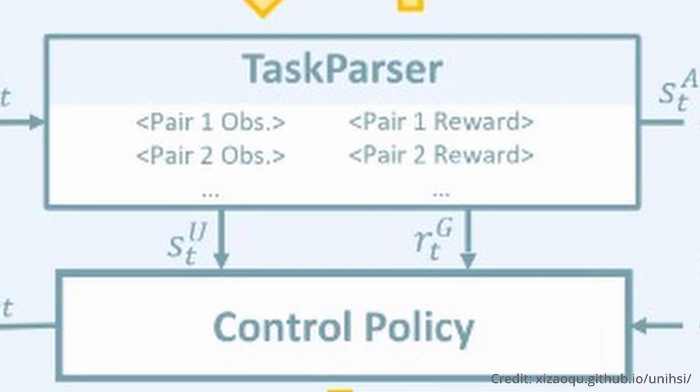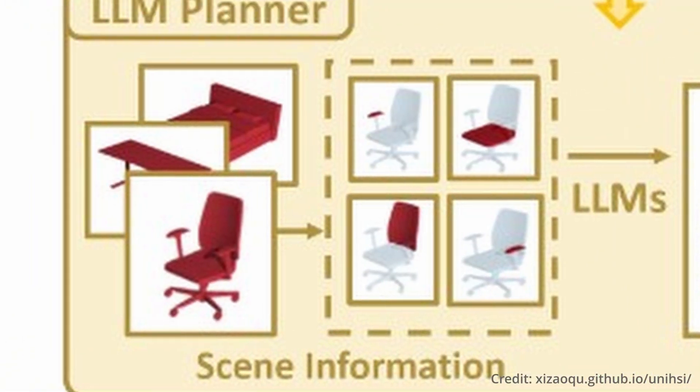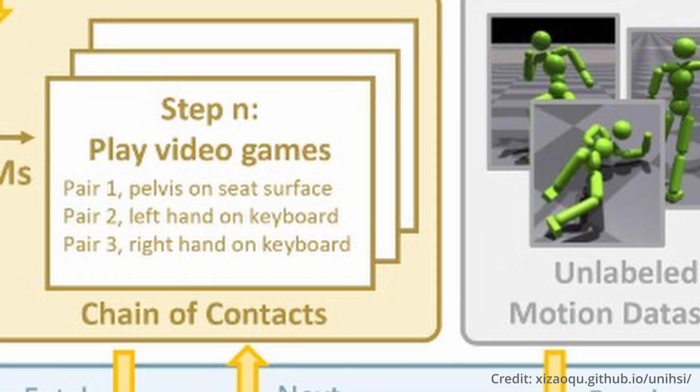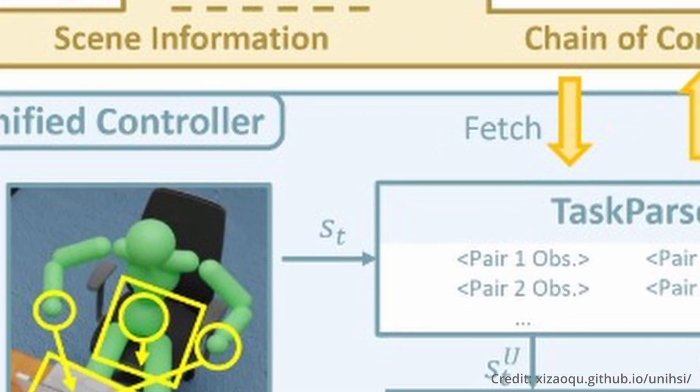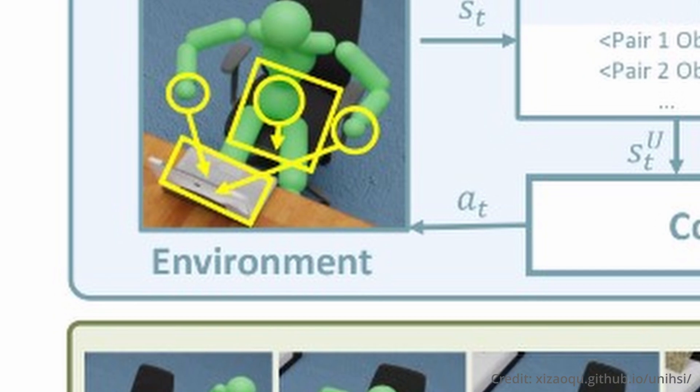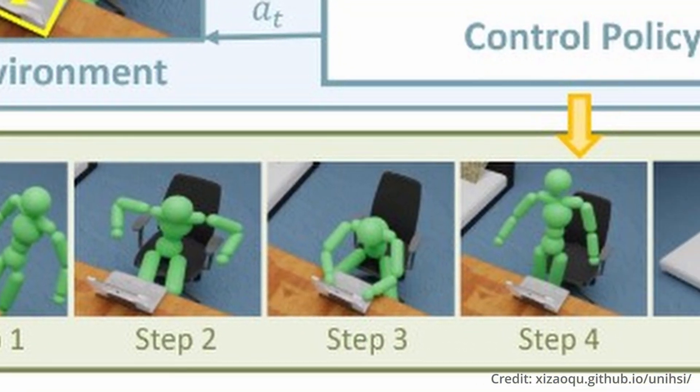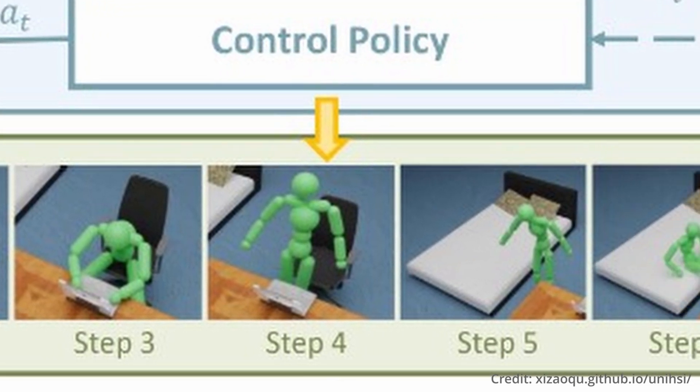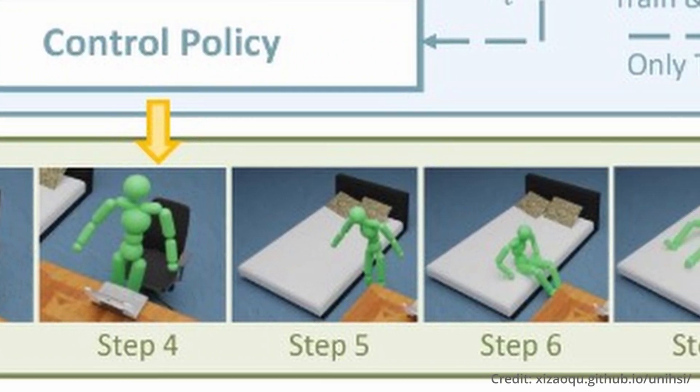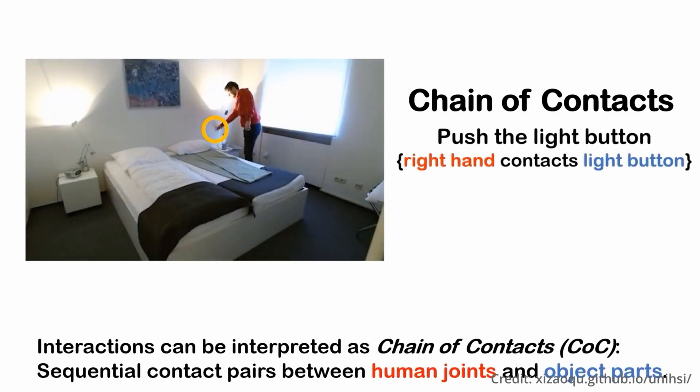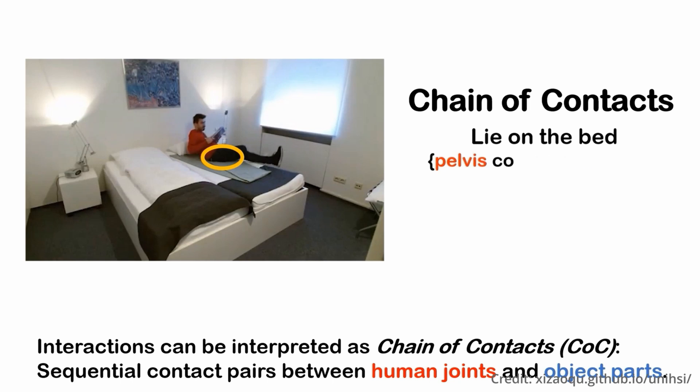But here's where it gets incredible. UniHSI ingeniously integrates a large language model planner that translates the language prompts into structured task plans, coupled with a unified controller that seamlessly converts chain of contacts into a uniform task execution. This synergy results in a unified, coherent mechanism that paves the way for diverse and effective human-AI interactions like never before.